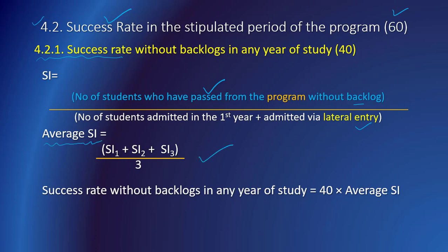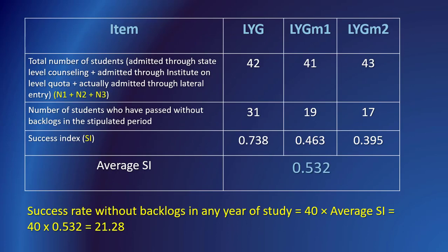For the last three pass-out batches, the average success index is the sum of the three success indices divided by 3. The success rate without backlog is then calculated, with 40 being the total marks. In a practical example, using the total number of students and number who passed without backlog, the average success index is computed. In this situation, the program will be awarded 21.25 marks out of 40. As usual, the visiting team will verify the records for the data presented.